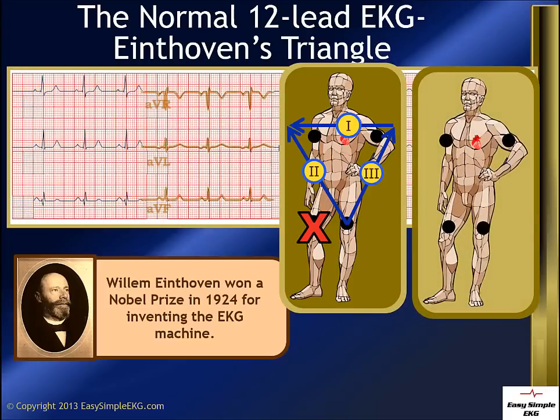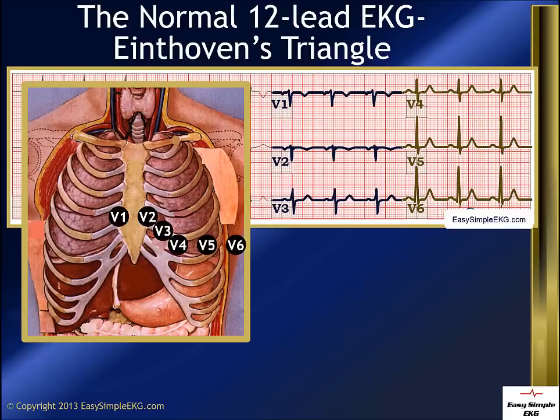AVR, AVL, and AVF look from the right arm to the heart, the left arm to the heart, and the left leg or foot to the heart. Leads V1 through V6 represent the precordial or chest leads. These leads look from the chest wall where they are placed to the heart.